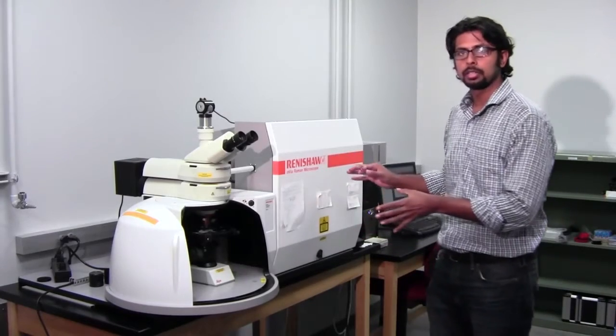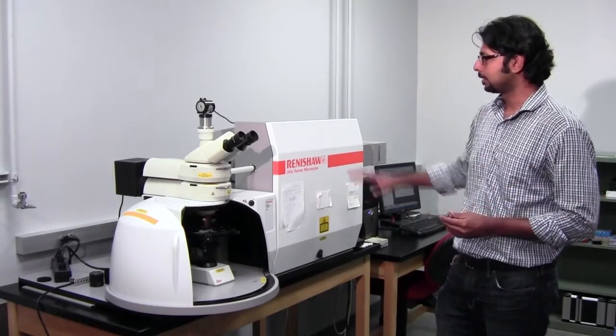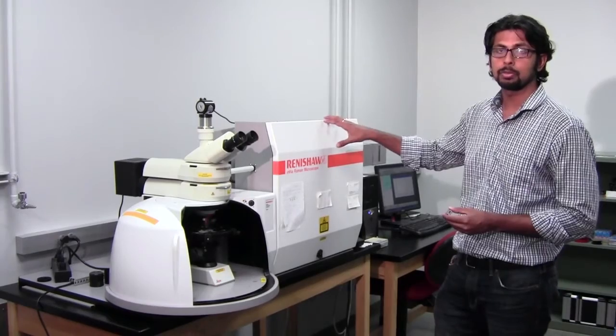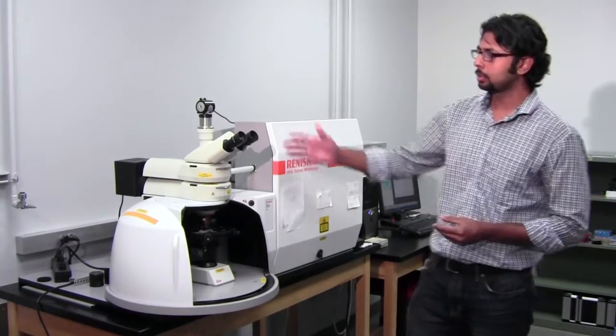So far you've heard about what the Raman spectrometer does and how it works. Now what I am going to show you is how we actually use Raman spectroscopy. This is the Raman spectrometer. It has got two units. This is the place where the light gets generated and this, as you can see, is the microscope.